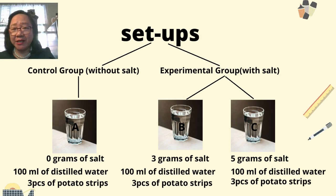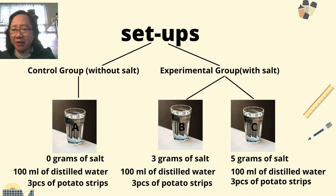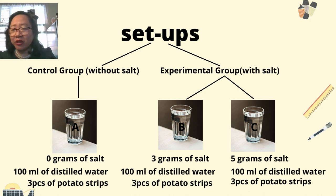So this will be your set-up. Your potato should have a control group without salt and an experimental group with salt. Under the control group, we have 0 grams of salt, 100 ml of distilled water, and 3 pieces of potato strips. Under the experimental group, it is divided into two: B and C. In B, 3 grams of salt is added; in C, 5 grams of salt is added. Both will have 100 ml of distilled water and 3 pieces of potato strips.